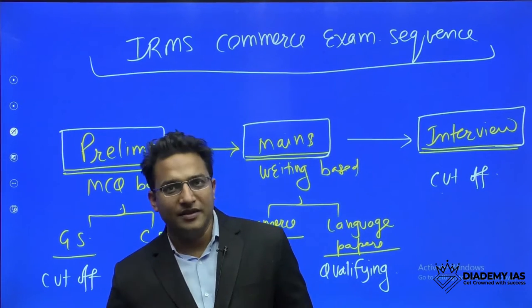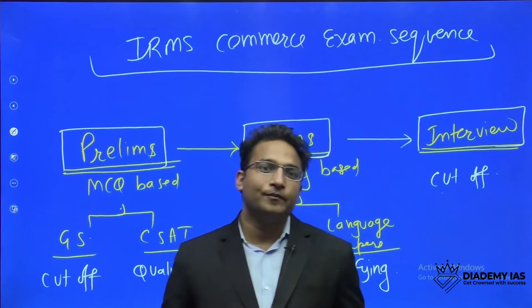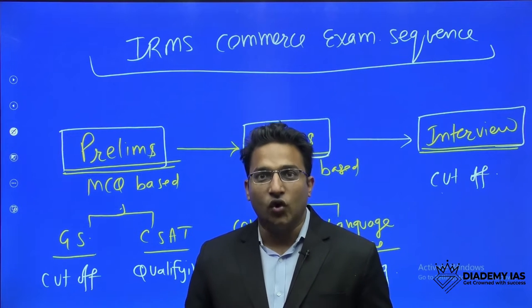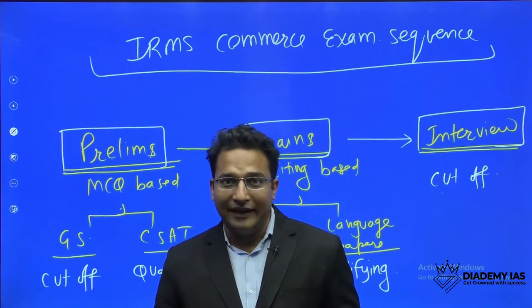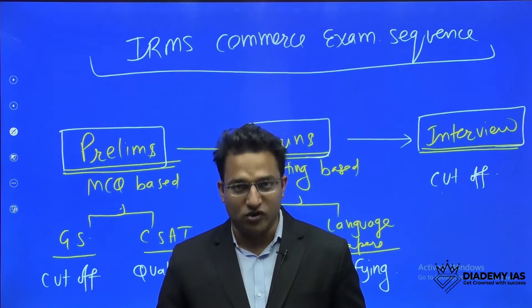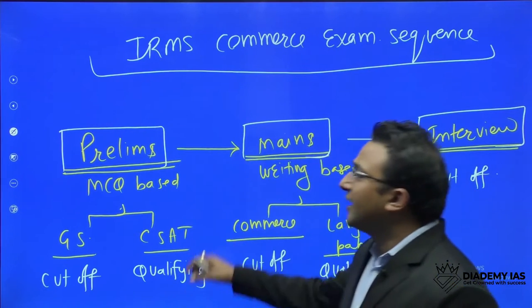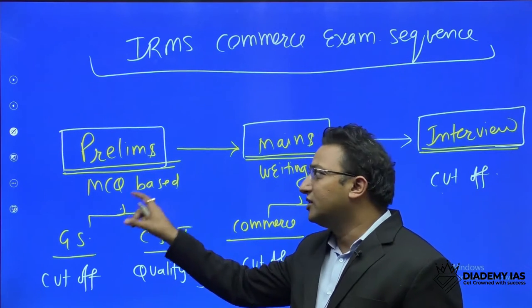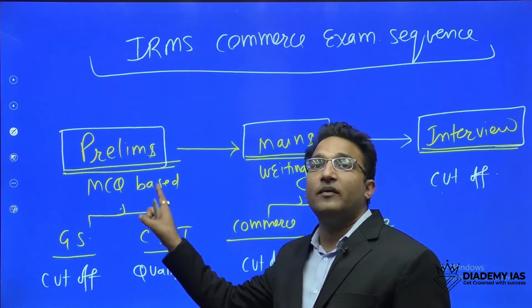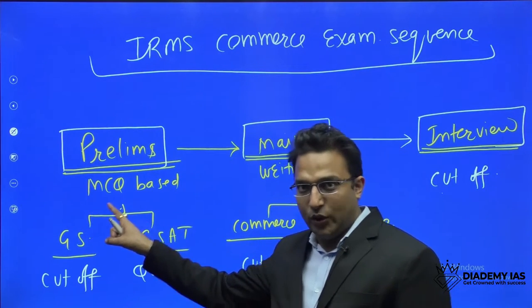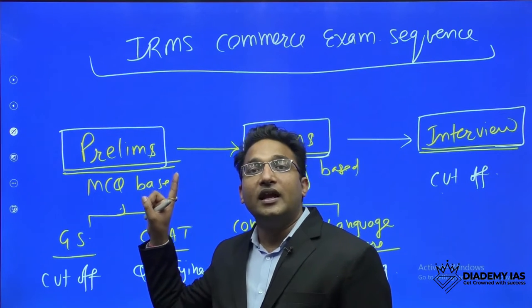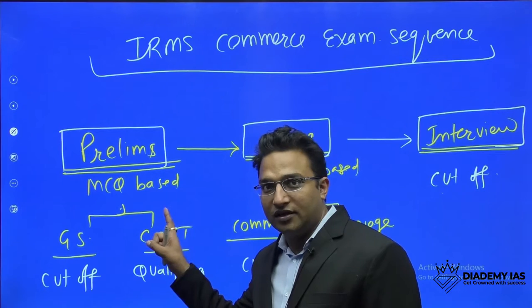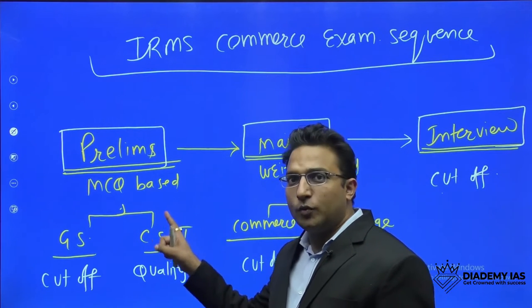Hello and welcome. My name is CA Rahul Kumar. In this video I will discuss the exam sequence of IRMS — Indian Railway Management Service — Commerce Optional. Basically there are three stages. The first stage is the prelims, where the questions will be MCQ based, and there will be one-third negative marking.